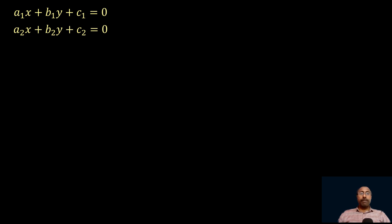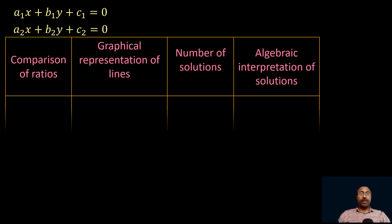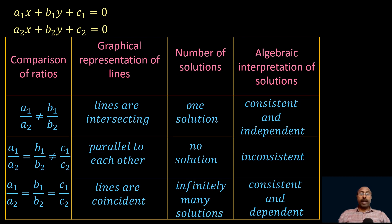If a1x + b1y + c1 = 0 and a2x + b2y + c2 = 0 are two linear equations in variables x and y, let us discuss the graphical representation and algebraic interpretation of these two lines according to the ratios of corresponding coefficients. In the first case, if a1/a2 is not equal to b1/b2, then the lines represented by the given equations are intersecting at a point. In this case, the two equations will have a unique solution and the equations are said to be consistent and linearly independent.